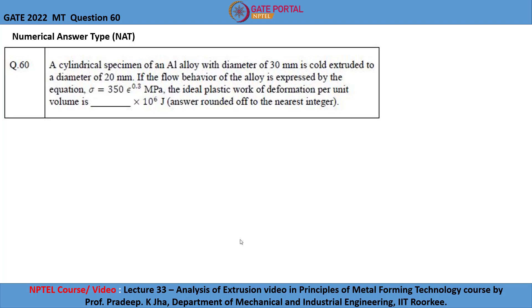If the flow behavior of the alloy is expressed by the equation sigma equals 350 multiplied by epsilon power 0.3 MPa, the ideal plastic work of deformation per unit volume is to be found and the answer has to be rounded off to the nearest integer.